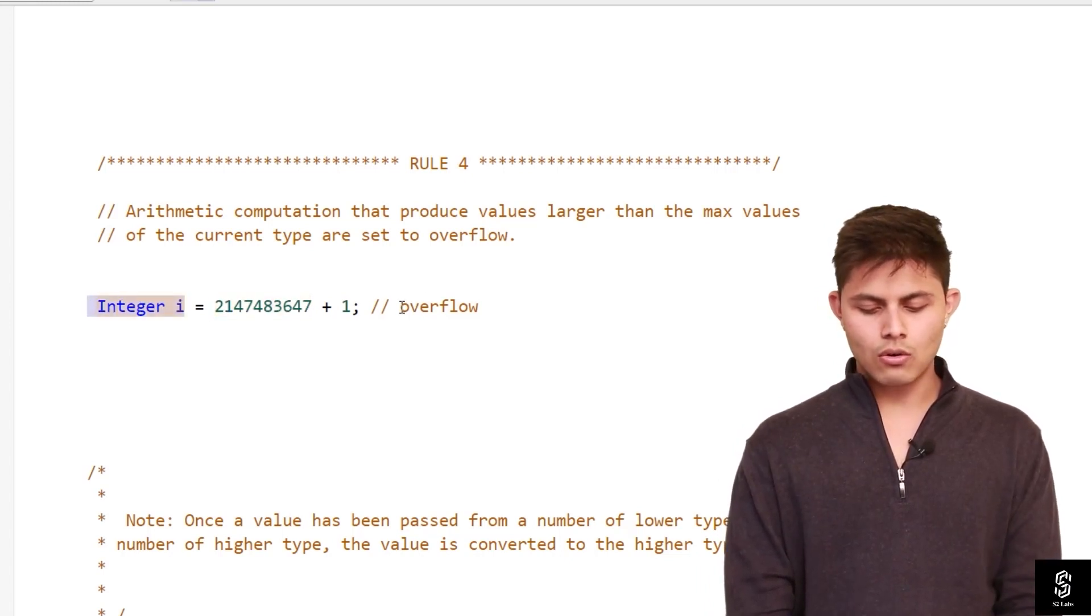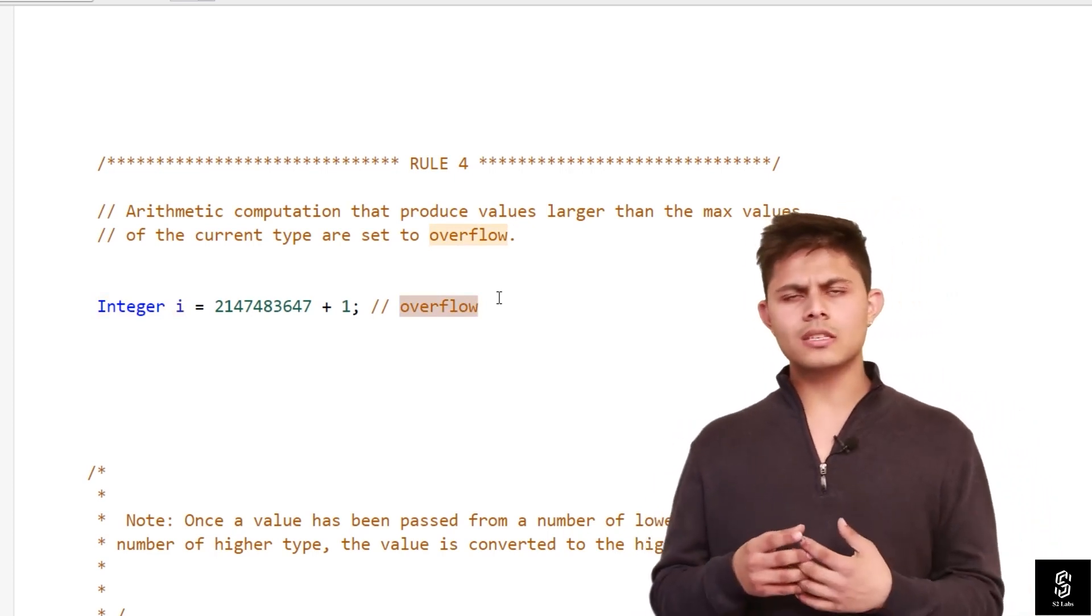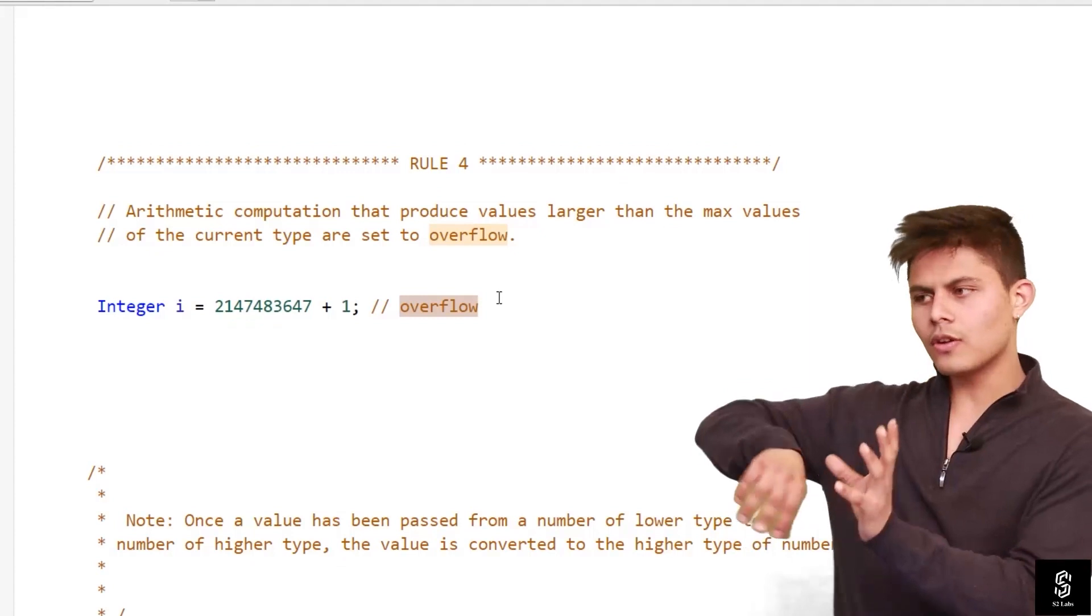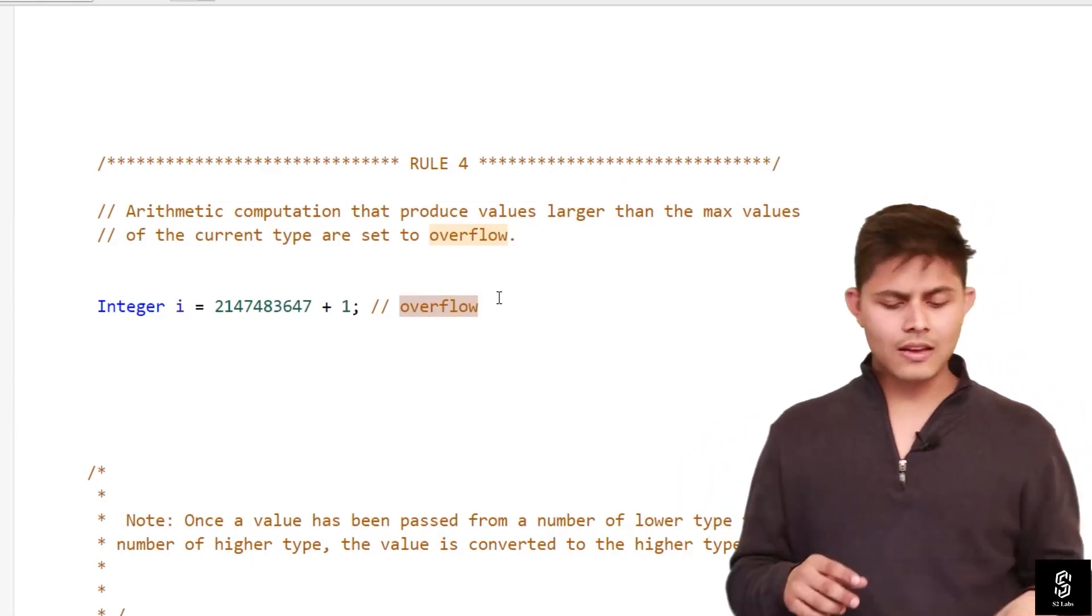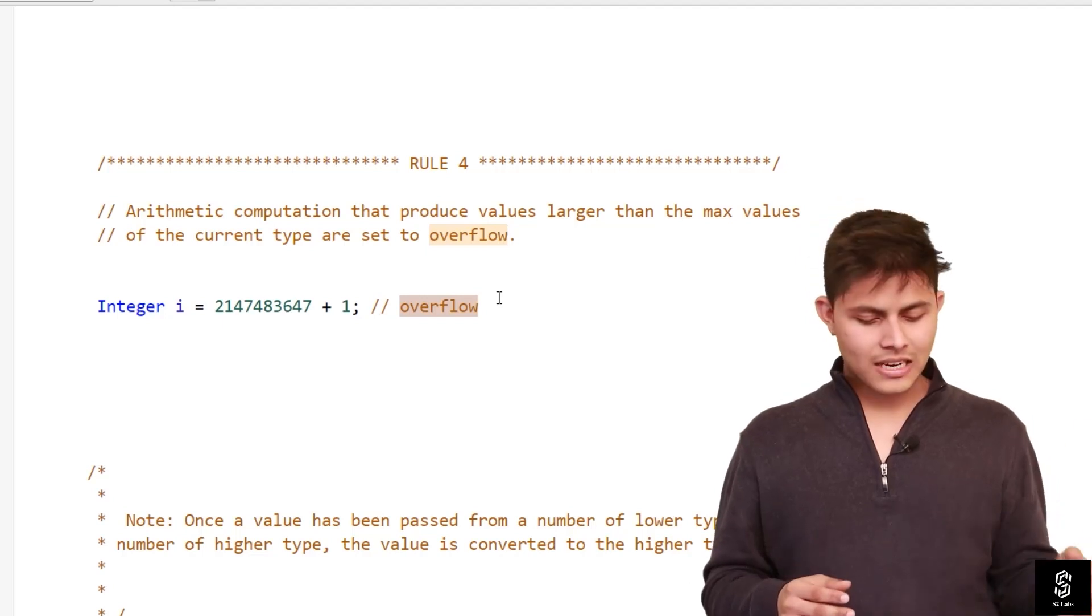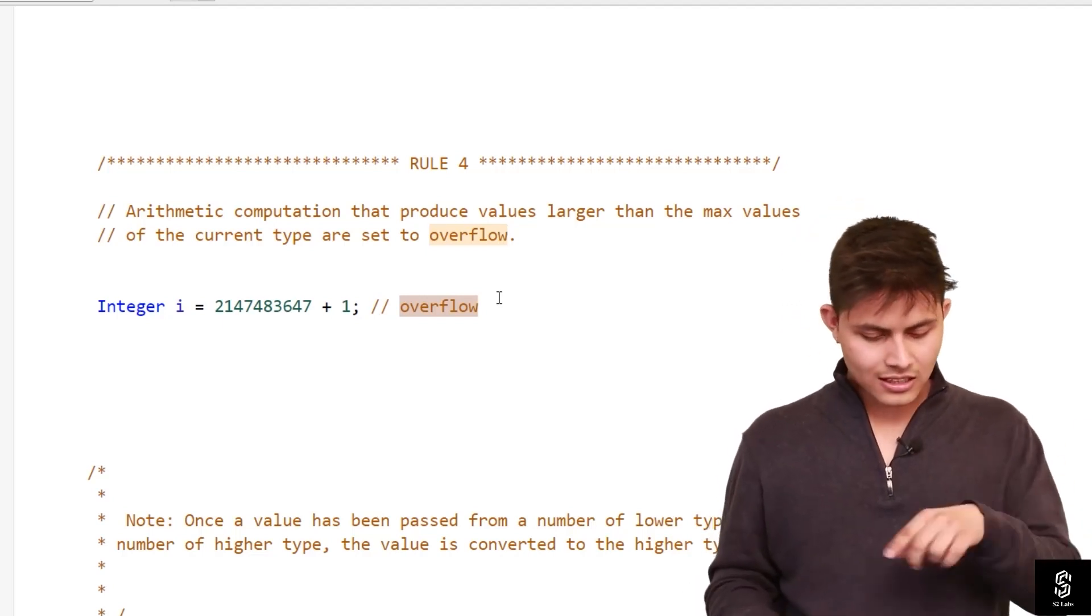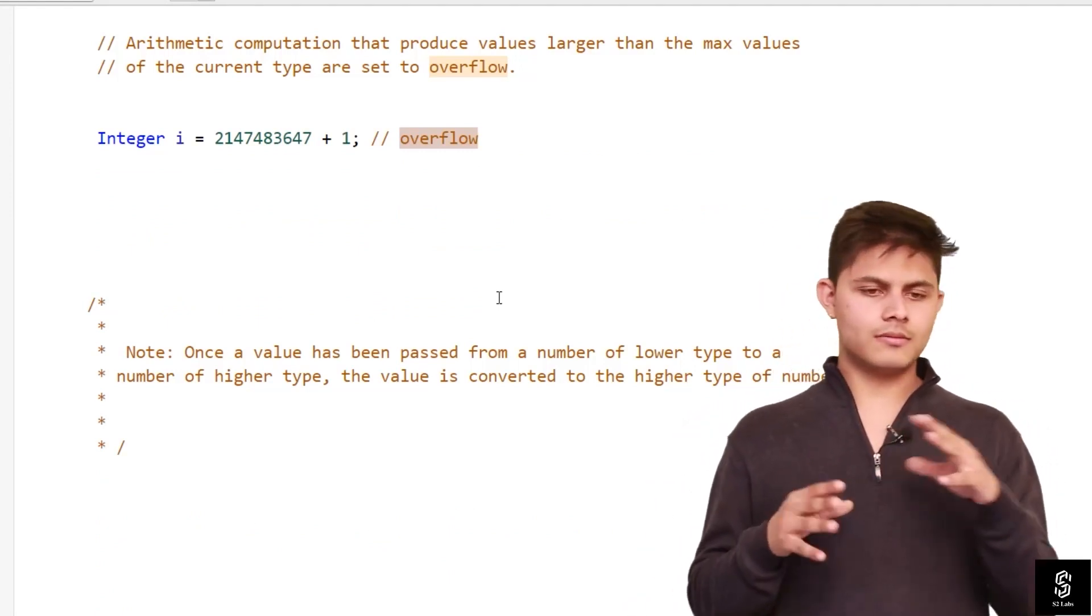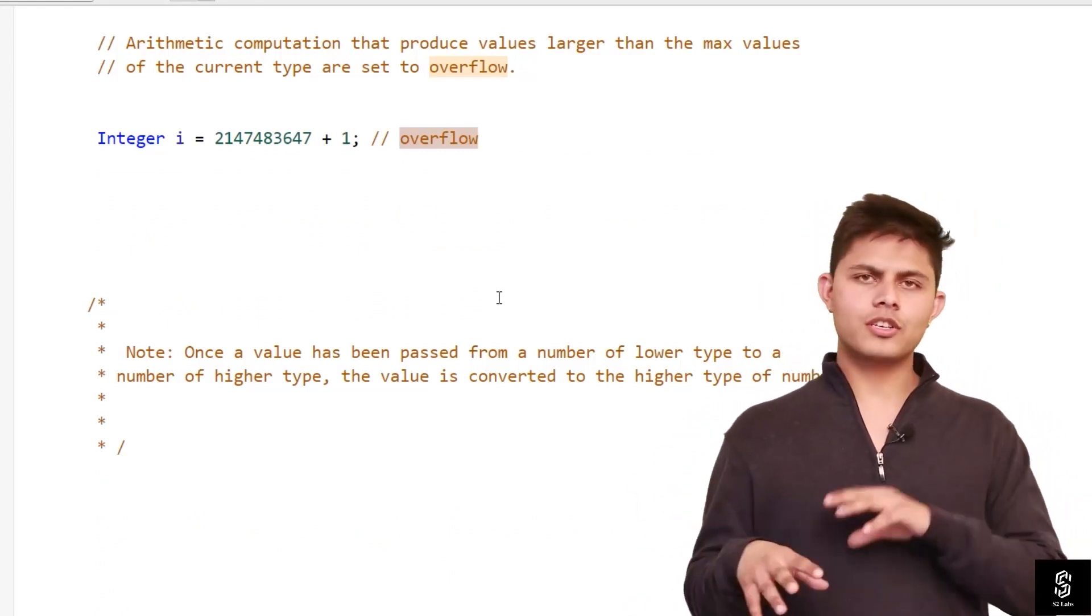it will overflow. What overflow means is that the additional values that you have added will overflow that i. If you try to print i, it will store minus 2147483648. These are all the major rules that you have to consider while storing different types of information into different types of variables of different data types.